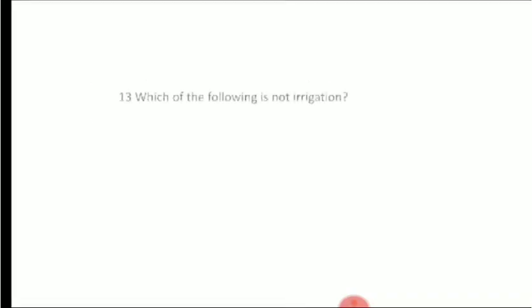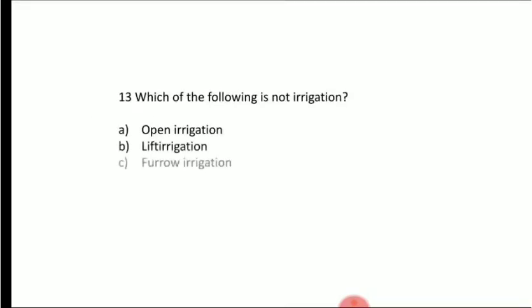Next question: which of the following is not a type of irrigation? Option A: open irrigation, Option B: lift irrigation, Option C: furrow irrigation, Option D: flow irrigation. Answer is Option A, open irrigation. Open irrigation is not a type of irrigation.